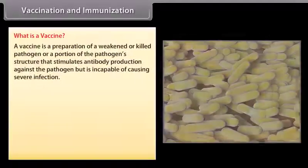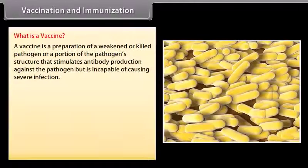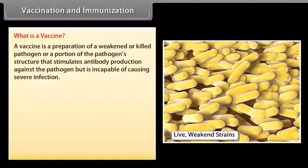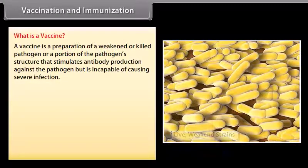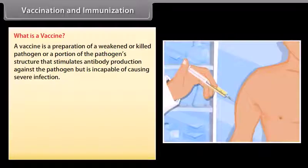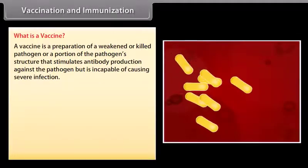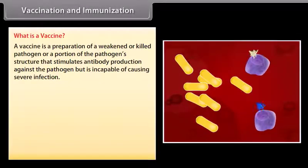What is a vaccine? A vaccine is a preparation of a weakened or killed pathogen, or a portion of the pathogen's structure, that stimulates antibody production against the pathogen but is incapable of causing severe infection.